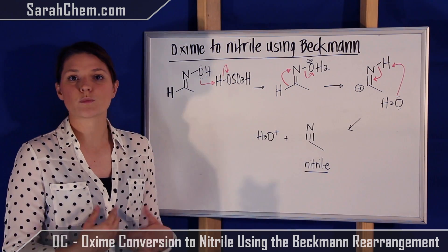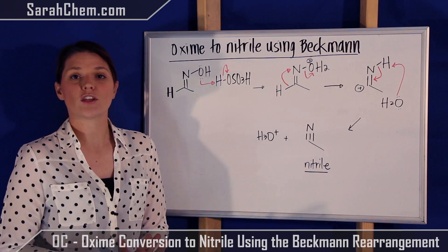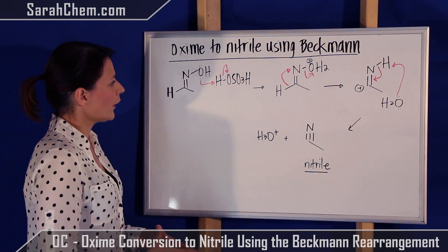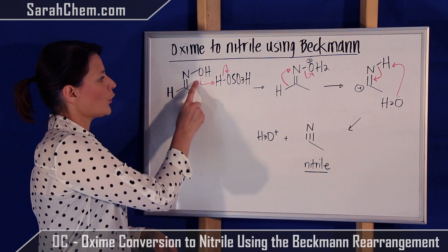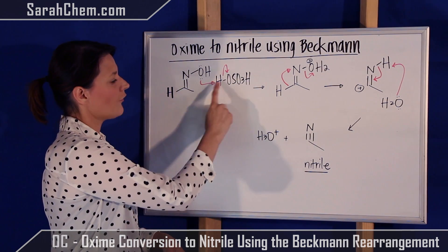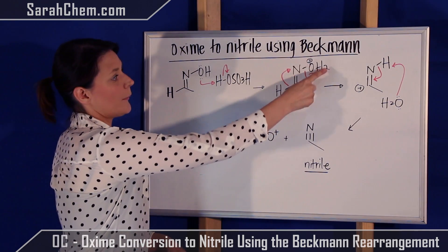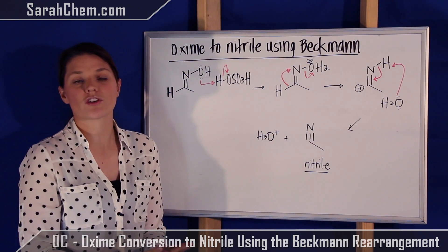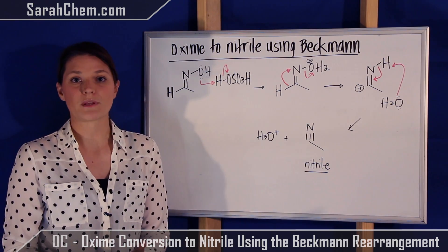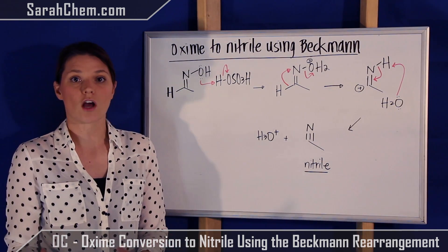The acid catalyst is there because what we want to do is create a good leaving group from this OH group, and you do that by protonating it in acidic solution. Using the electrons on the oxygen, we take a hydrogen off of the sulfuric acid, protonating this OH group. Now we have H₂O and a positive charge on an electronegative oxygen — that's not a comfortable position for the oxygen, but it does allow for that oxygen to be kicked off pretty readily, making it a really solid leaving group.